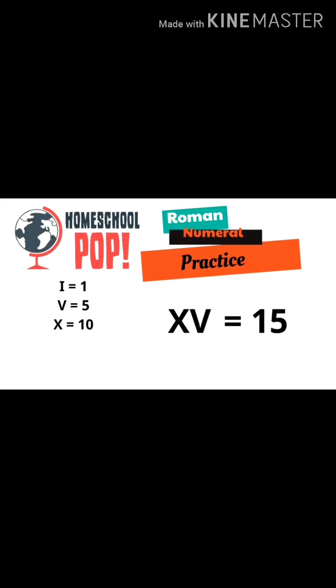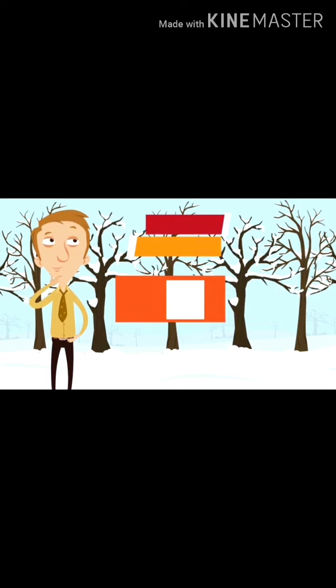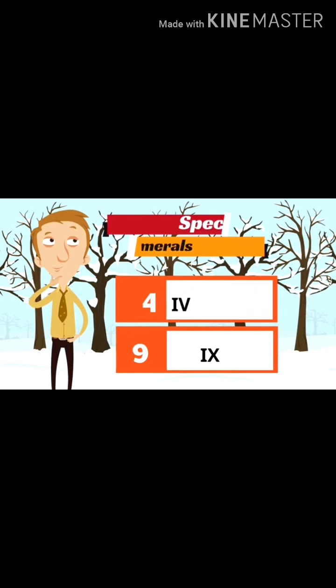Now that we've looked at how to put some of these together, I want to tell you about two special numerals that are a little bit different. The first is the number four. The number four is represented with an I and a V, and the I is before the V because four is one less than five, which is V. With nine, it's similar except with the X. Nine is I X. X is 10 and I is just before it, so nine is I X.